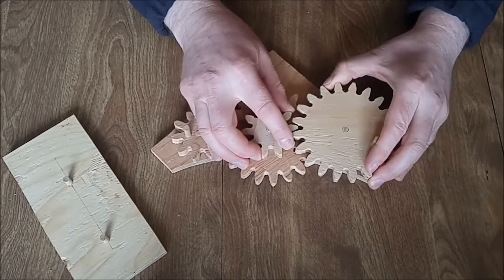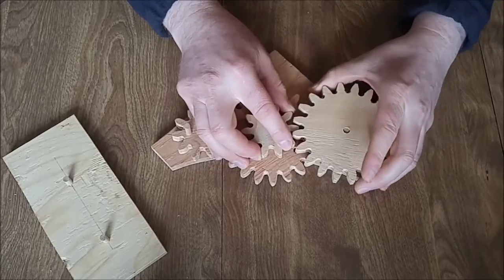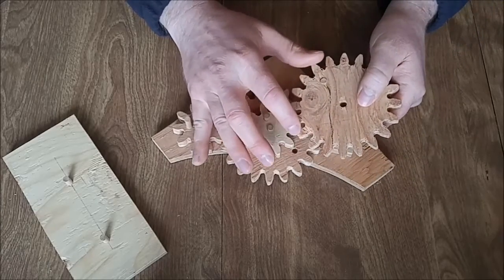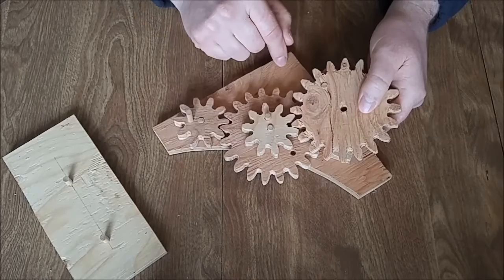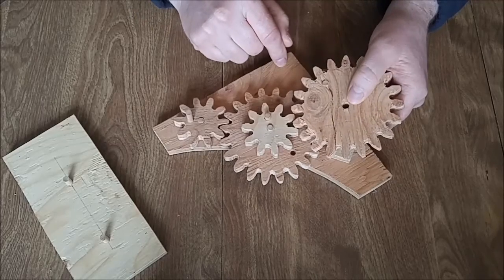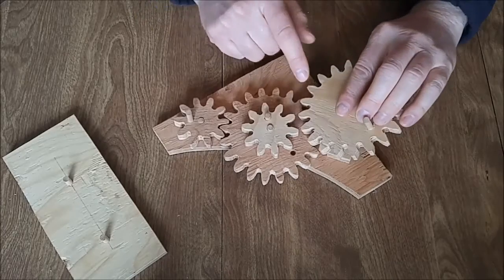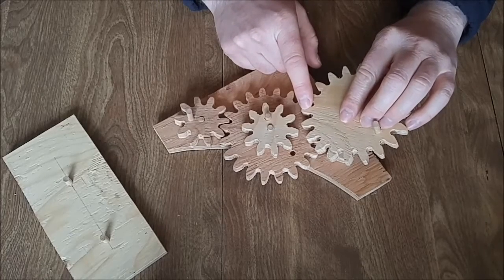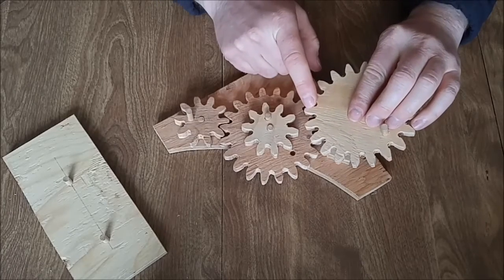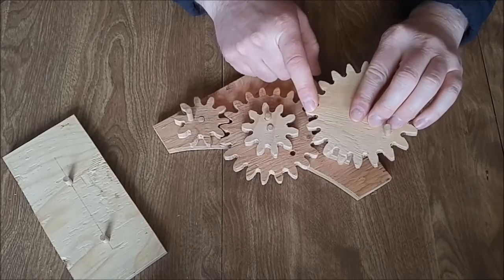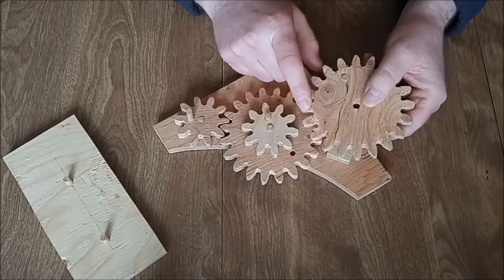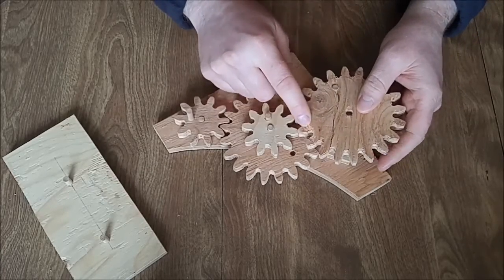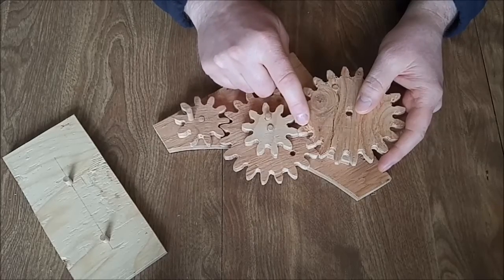Also, I thought of an improvement that I should have done on these. With the Forstner bit there's a lot of tearout here on the bottom side. What I'm going to do going forward is drill halfway through on the top side just until the pilot tip of the Forstner bit goes through the backside, and then I'll flip the gear over and finish it again from the bottom side. That will prevent all this tearout here.